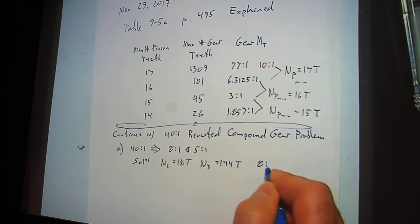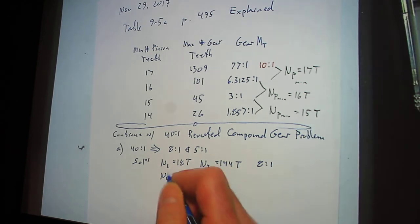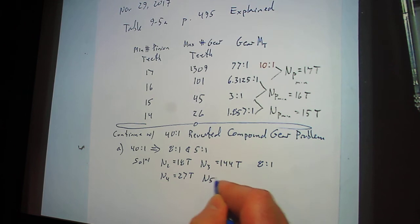That was my 8 to 1. And N4 equals 27T. And N5 equals 135T.